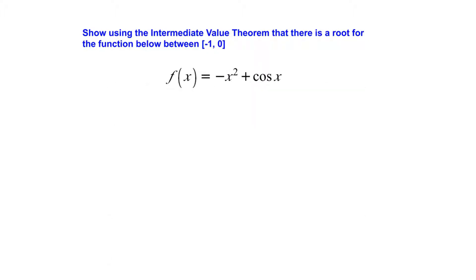Now time for more practice. For this next example, you're going to need your calculator. Write down the problem and use the Intermediate Value Theorem to come up with a conclusion. We need the calculator because we're doing cosine of x, which gives us a decimal. For any trig functions, assume we're working in radians unless told otherwise — radians are now our default.